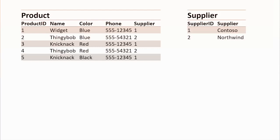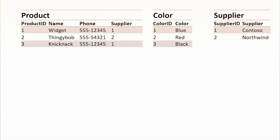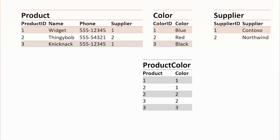We can now split things out. We've got a product table and a supplier table. We've assigned a unique ID to each supplier and each product, and we use the supplier ID in the product table to say which supplier provides which product. We could also do that with color. We now have a color table and a product table. But there's nothing that says which color goes with which product, so we need a mapping table — an intermediary table that joins the product table to the color table. It's beginning to look much more like a relational database.